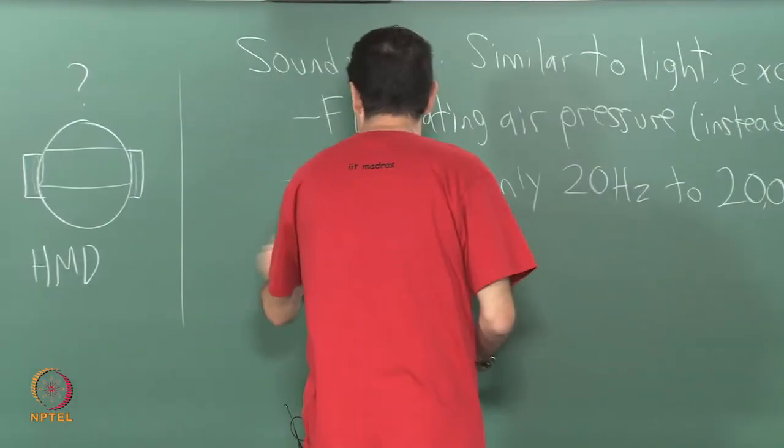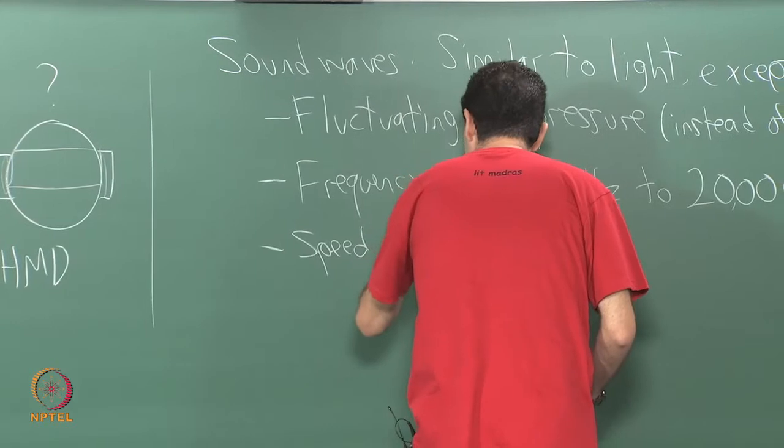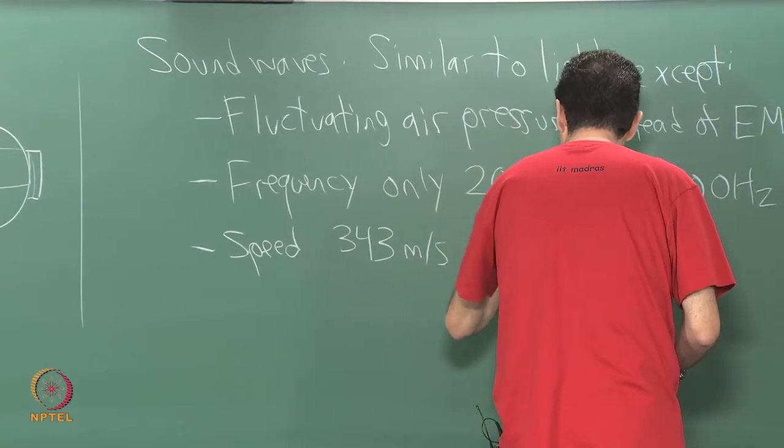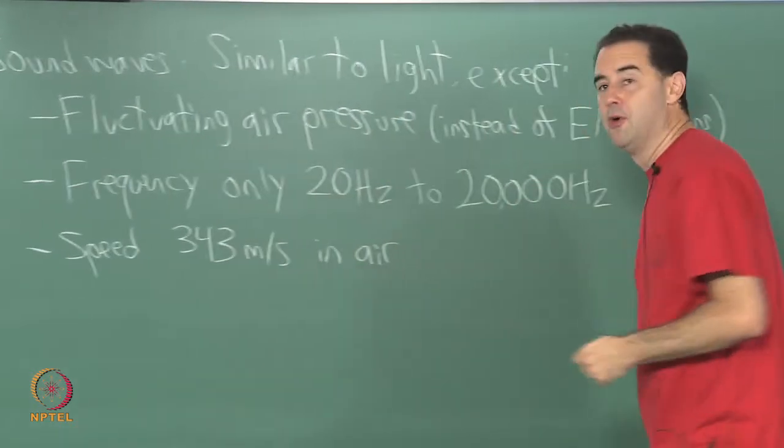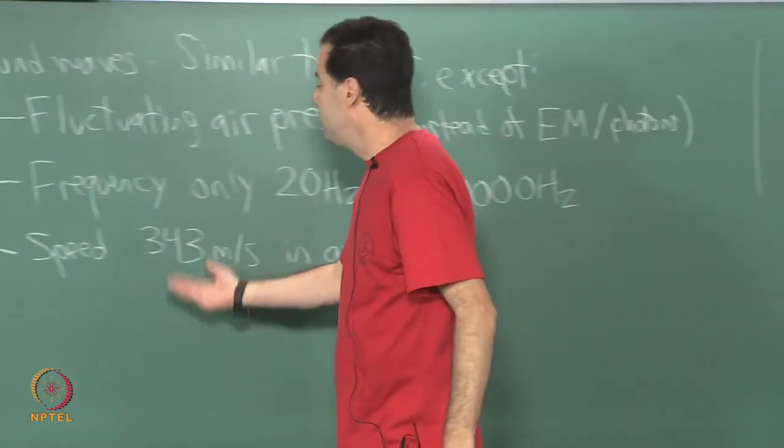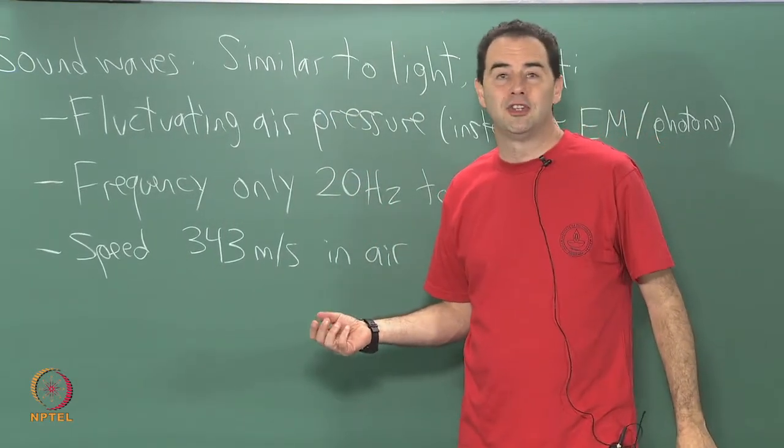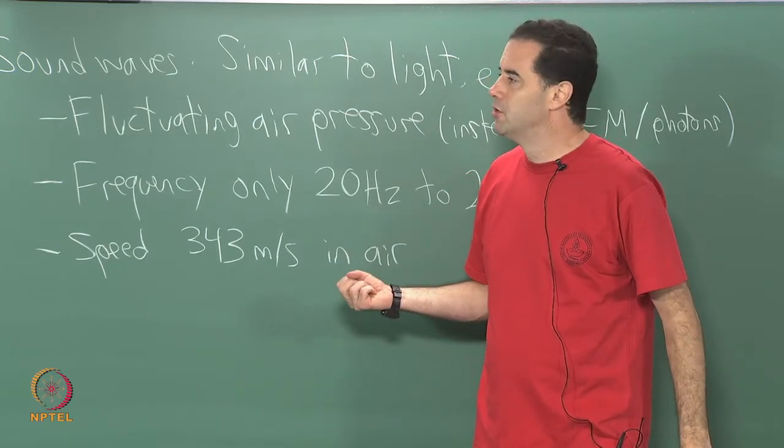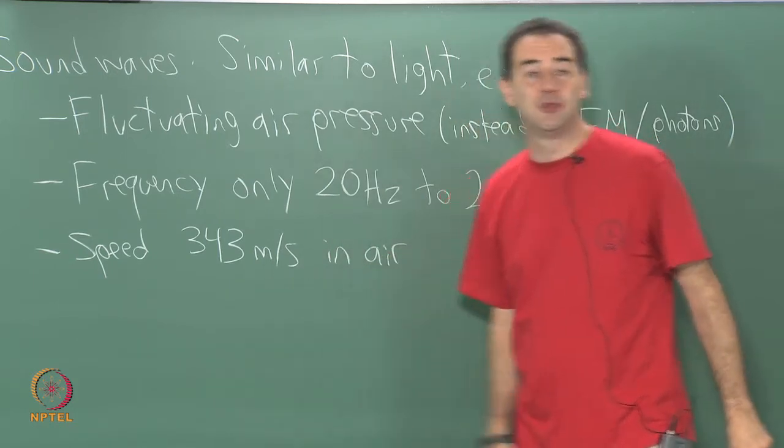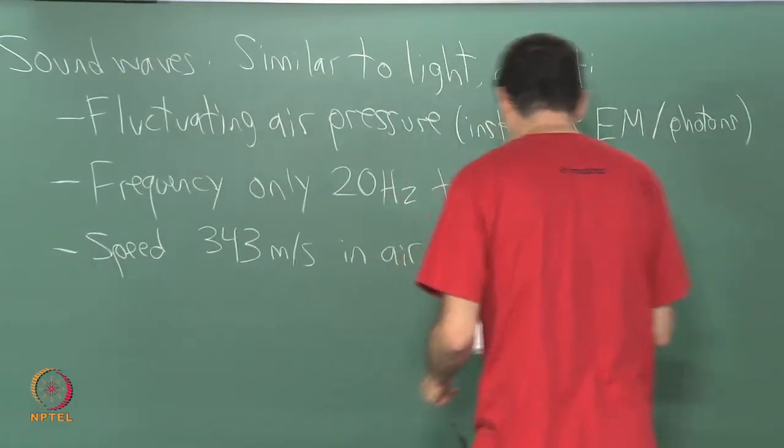Speed is much lower. So, 343 meters per second in air as opposed to 3 times 10 to the 8th for light. So, the much slower speed that sound propagates compared to light will make a significant difference. It will enable certain types of perceptions that might not have been possible with light. So, this ends up being interesting and the human body uses the fact that the propagation speed is slower in some cases.